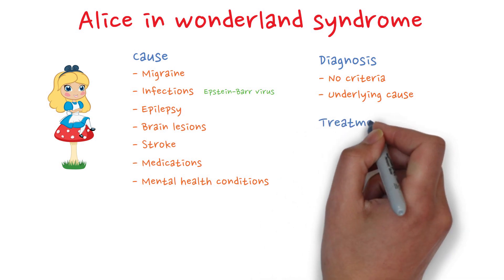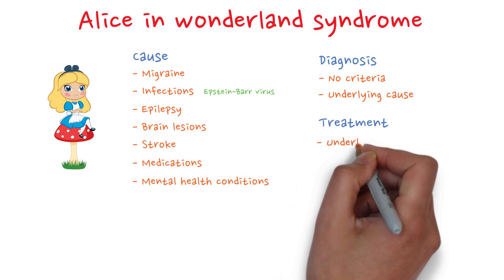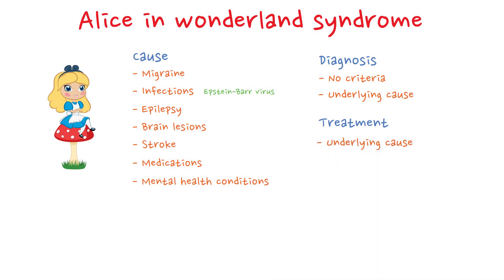Finally, we have treatment options. There is no cure at the moment for Alice in Wonderland syndrome besides treating the underlying disease. So if migraine is the source of your symptoms, managing migraine should help, or if infection is the cause, obviously treating the infection.